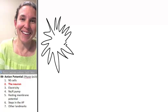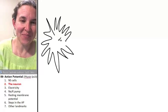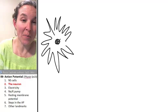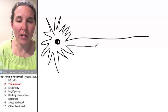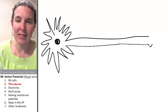This is the cell body of the neuron. And here's my cell nucleus. And then you can see that we have a whole bunch of extensions.